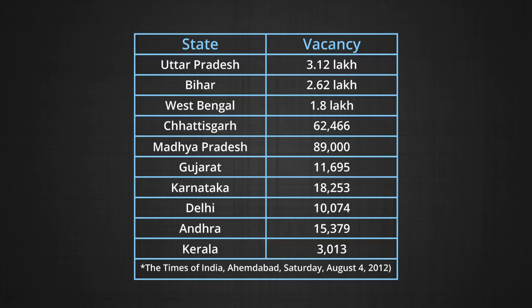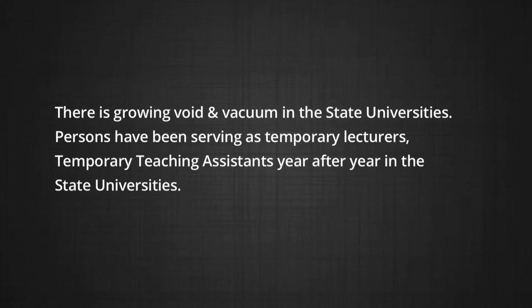For its size, Chhattisgarh has 62,466 vacancies and Madhya Pradesh has 89,000. Gujarat has 11,695, Karnataka 18,253, Delhi 10,074, Andhra Pradesh 15,379, and Kerala 3,013. As reported in The Times of India, Ahmedabad, August 4, 2012. The consultative committee dealt with two specific proposals by UGC on teacher training. There is a growing void and vacuum in state universities, where persons have been serving as temporary lecturers and teaching assistants year after year. Posts are not filled after superannuation, and there is an abrupt cut in teaching and research positions. Even when positions are sanctioned by the center, there is no state concurrence.